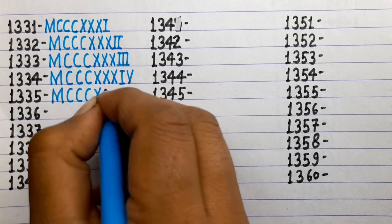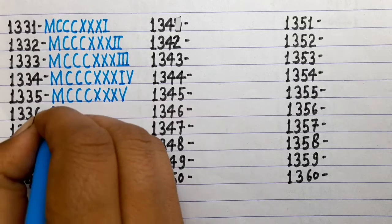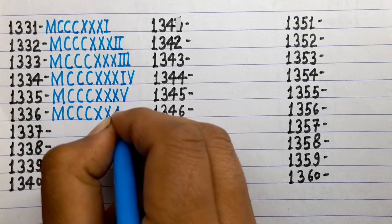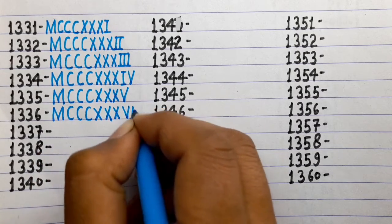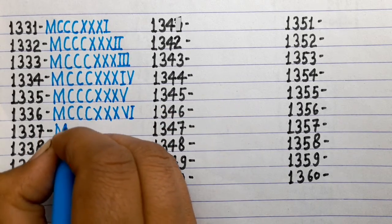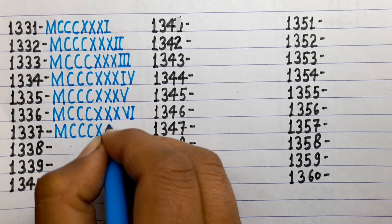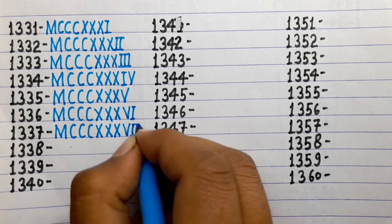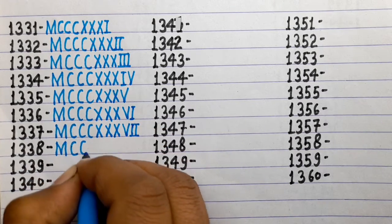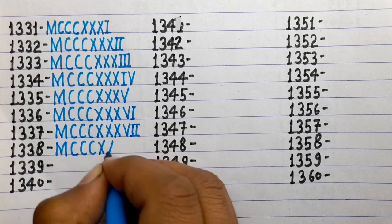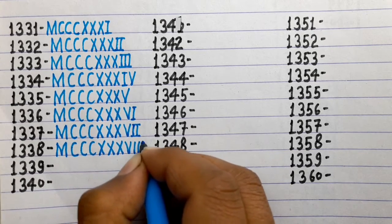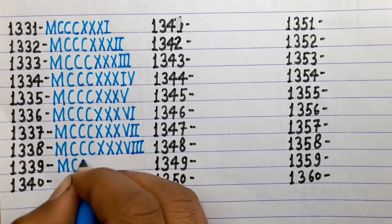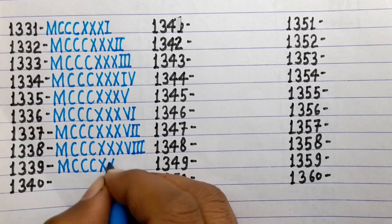1335 is MCCCXXXV. 1336 is MCCCXXXVI. 1337 is MCCCXXXVII. 1338 is MCCCXXXVIII. 1339 is MCCCXXXIX.